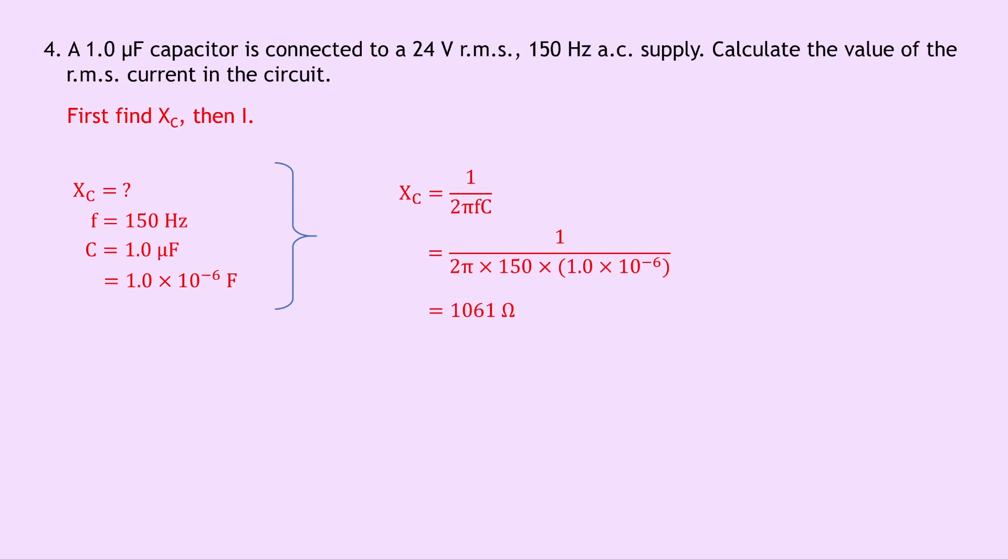Now we know XC, so we can now find the current I using the RMS voltage as well. So writing down what we know, we're trying to find the current I, we know that XC is 1061 ohms and the voltage V is 24 volts.